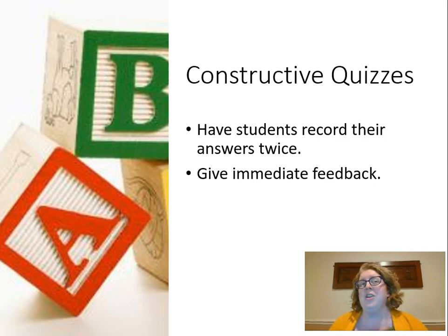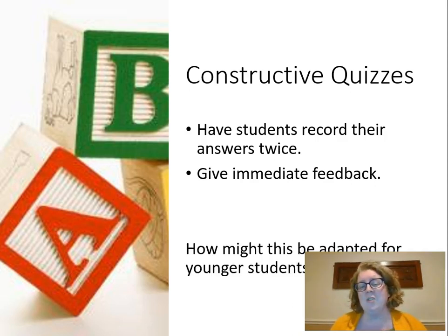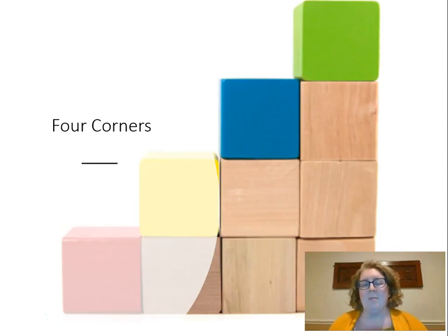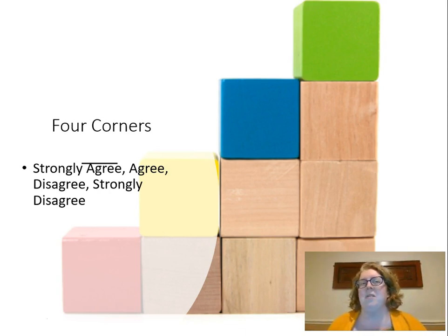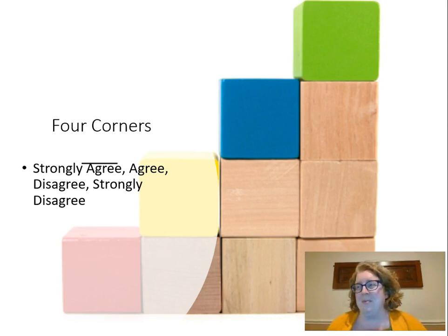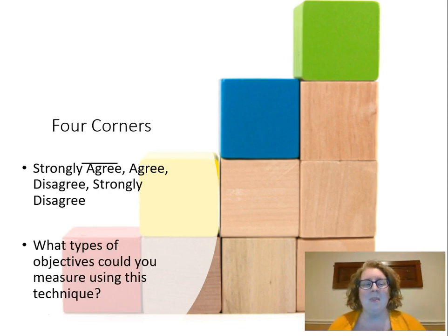A four corners activity is where each corner of the classroom is labeled — for example, strongly agree, agree, disagree, strongly disagree — and you have statements like 'I believe Charlotte is a good friend' if you're reading Charlotte's Web. Or you can label corners A, B, C, and D and use multiple-choice questions, having students gather in whichever corner matches their answer choice. There are some peer relationship dynamics at play — if everyone's going to corner B, students may just follow the crowd.